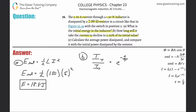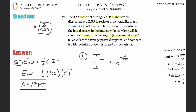Think of it this way: if you had 2 over 10, that's 20%. If you had 20 over 100, that's still 20%. If it were 10 over 100 it would be 10%, and 5 over 100 would be 5%. So the decimal form of five percent is 0.05. That means the left-hand side of our equation becomes 0.05, and the right side is e raised to negative t over tau.